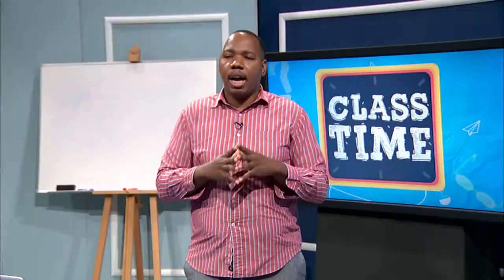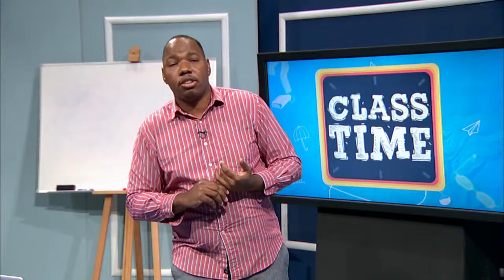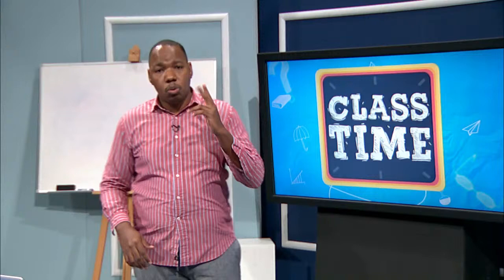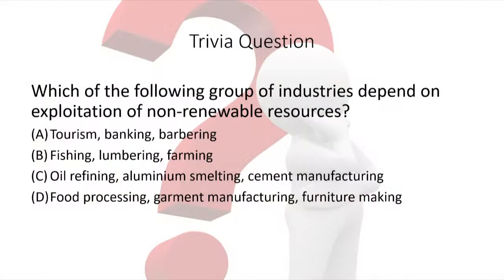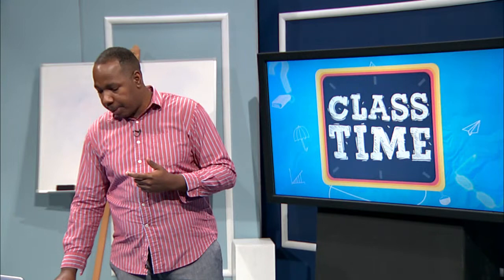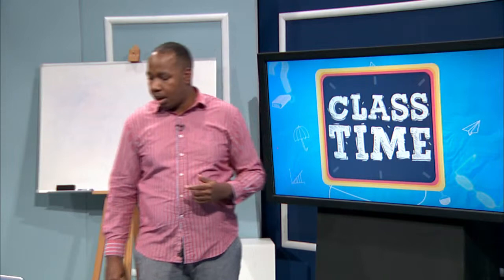That is it in a nutshell. We have covered the factors influencing industrial location, particularly as it relates to primary industries. In our next lesson, we're going to look at secondary industries. A quick review question: which of the following groups of industries depends on the exploitation of non-renewable resources? A: tourism, banking, or barbering; B: fishing, lumbering, or farming; C: oil refining, aluminium smelting, cement manufacturing; or D: food processing, garment manufacturing, and furniture making. The answer is C — oil refining, aluminium smelting, and cement manufacturing are all non-renewable.